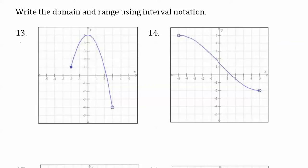In the first graph, it has a closed-in point, like a starting point for the graph, located at the ordered pair negative 2, 1. Then the graph goes up to a high point at 0, 5, and then it goes back down, with an ending point that is an open circle located at 3, negative 4. In between negative 2, 1 and 3, negative 4, it's connected.